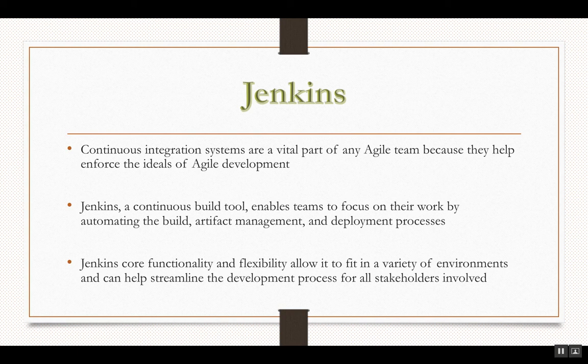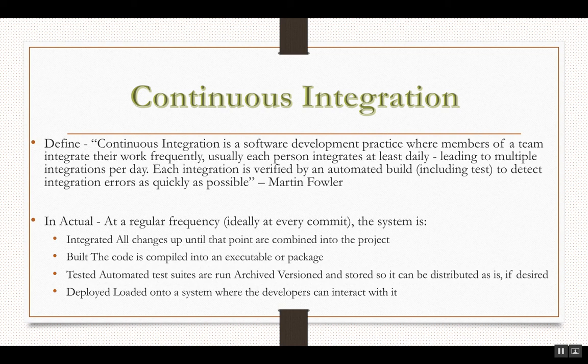Now we talked about Jenkins being a continuous integration tool, but what does that really mean? By definition, continuous integration is a software development practice where members of a team integrate their work frequently — usually each person integrates at least daily. Each integration is verified by an automated build to detect integration errors as quickly as possible. This definition was given by Martin Fowler.